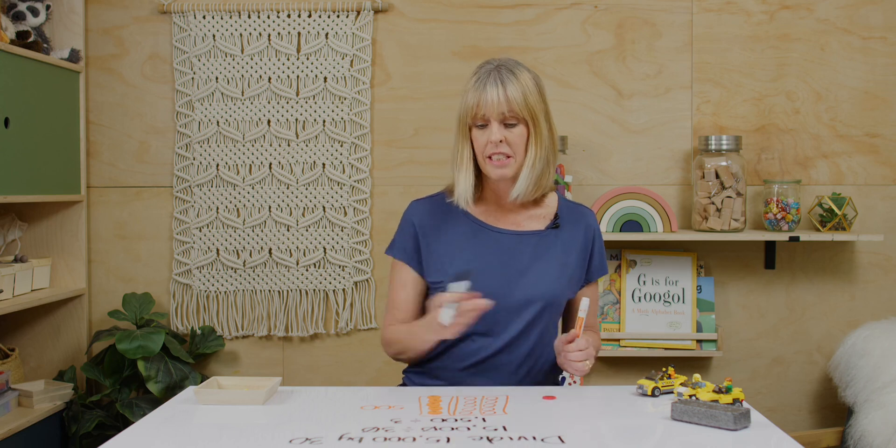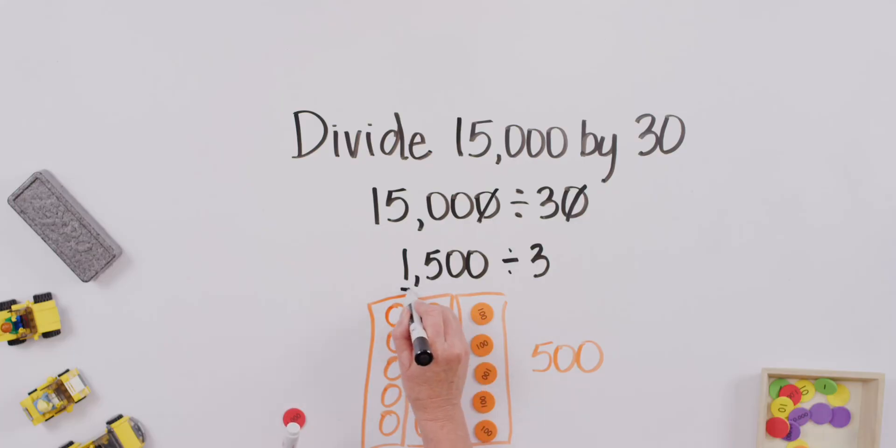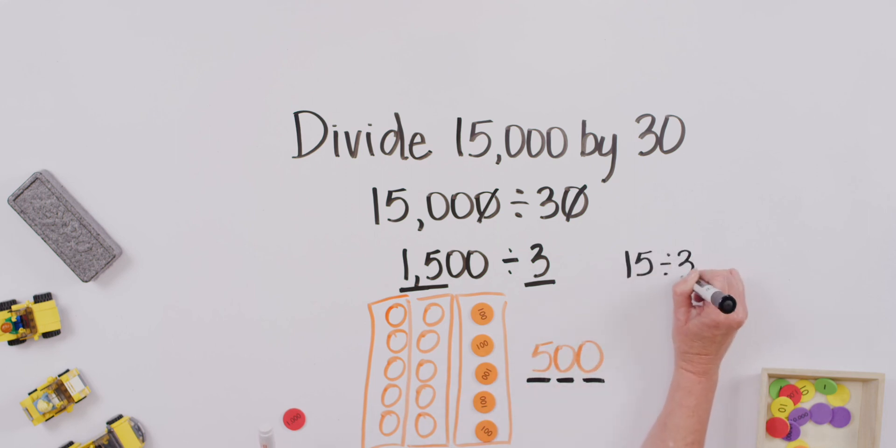Another way to look at this. I have 1,500, or I have 15 right here. 15 divided by 3 is what? 5. But it's actually 15 hundreds. So, I need to make sure that I put my hundreds there, or my two zeros. That's another little trick. I did 15 divided by 3 to get my five tens. But, as we see here, it's hundreds. So, I added my two zeros.